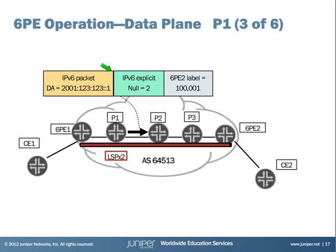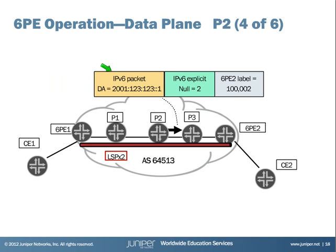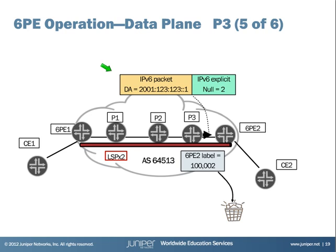Then 6PE1 forwards the traffic to P1, P1 forwards to P2, and so on. Inside the core, the core routers forward the traffic based on the outer label only, regardless of what type of traffic it is — whether IPv4, IPv6, or traffic related to Layer 2 VPN or VPLS. So nothing changes for the routers in the core. Until the packet reaches P3, which needs to do penultimate hop-popping and remove the outer label. This is why we need the inner label. Without the inner label, meaning if we send with only one label, P3 would have to do an IPv6 lookup, which is not our target in 6PE where we want to have an IPv6-free core. Note, RFC 4798 states the inner label may be an arbitrary label value. Based on that, the Junos 6PE implementation uses a value of 2 for the inner label.